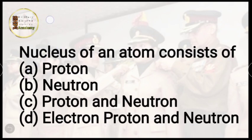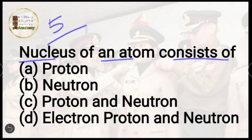Question number 5: the nucleus of an atom consists of — proton, neutron, proton and neutron, or electron, proton and neutron? This is very easy. The correct answer is option C, proton and neutron.